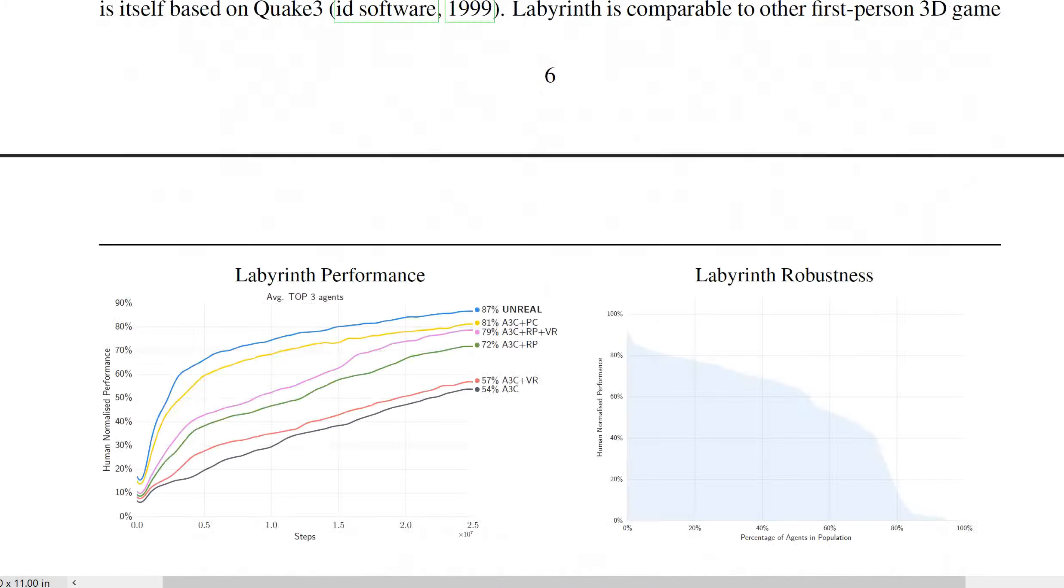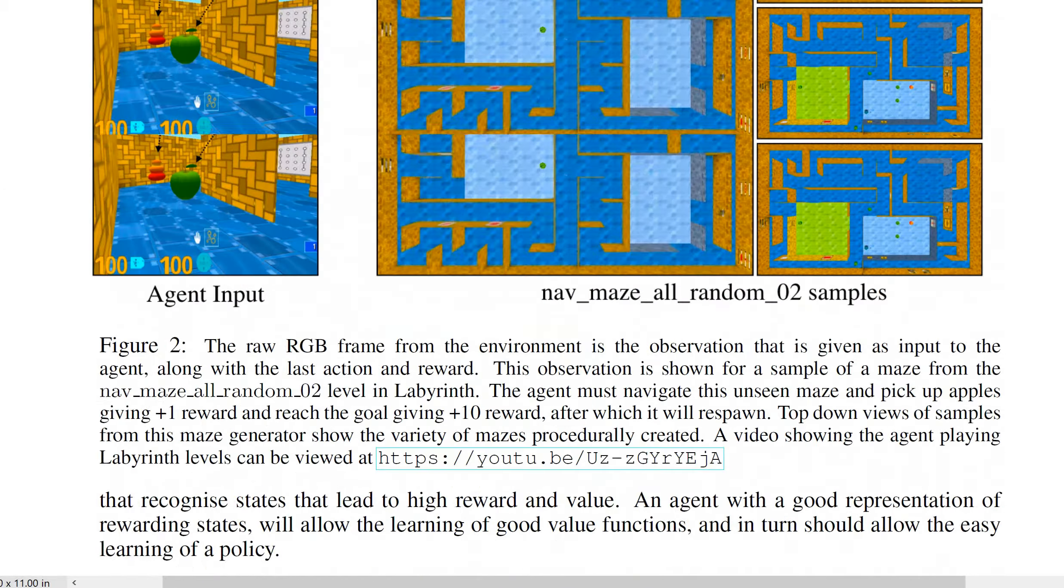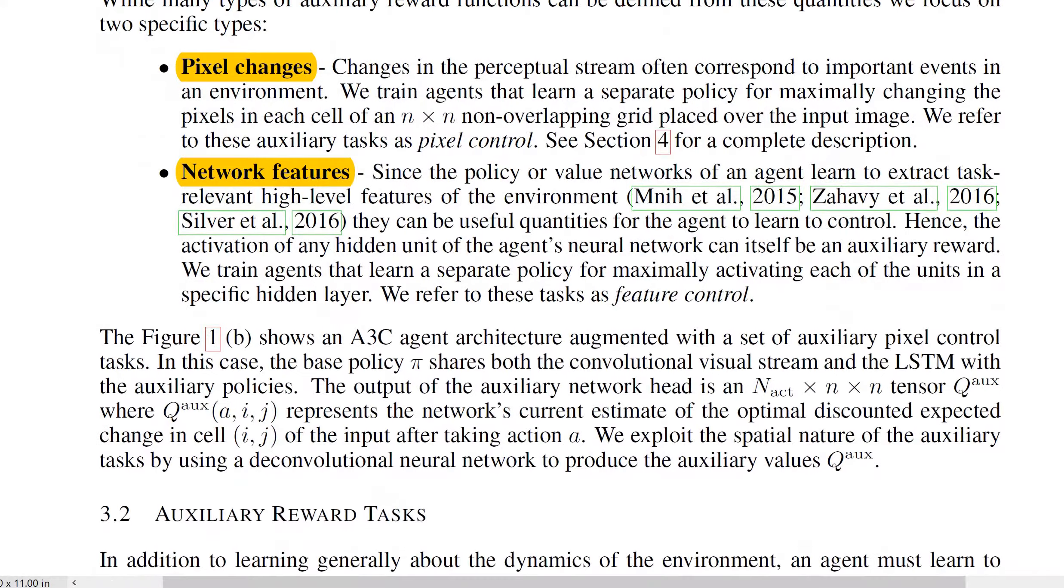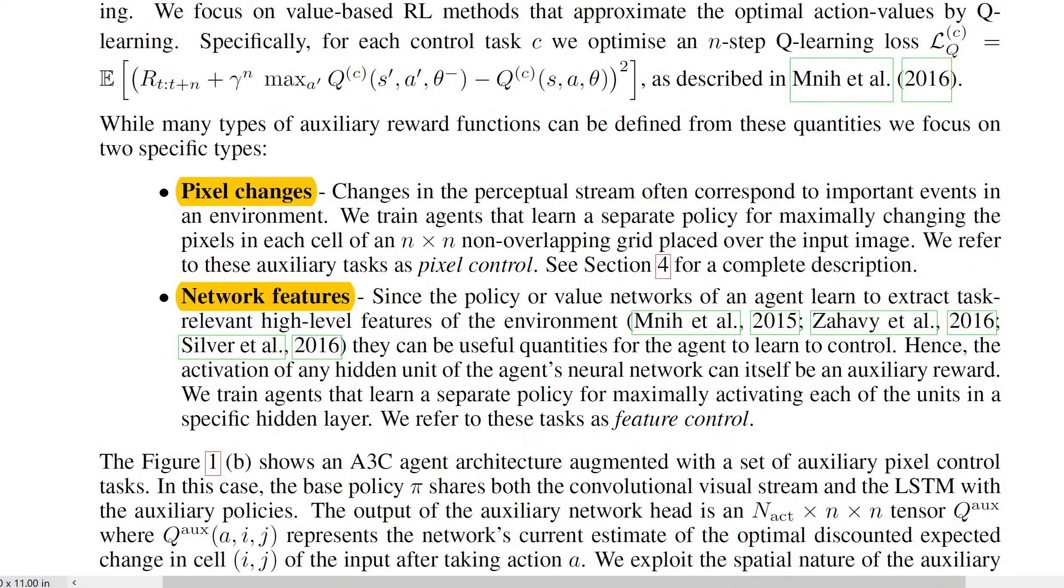Which means that I have to decide as an implementer of this algorithm what my auxiliary task will be. Here pixel changes and network features seem like fairly general tasks that you could apply to a lot of these kind of problems. But it always comes down to how much knowledge about the task would you like to code into the actor.